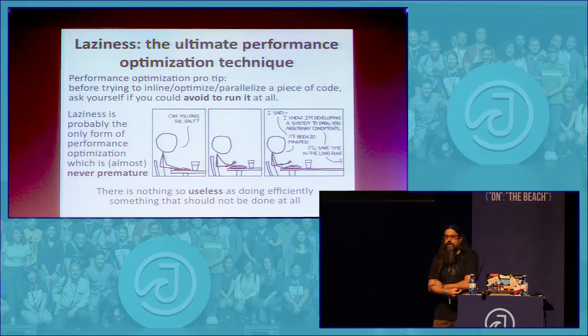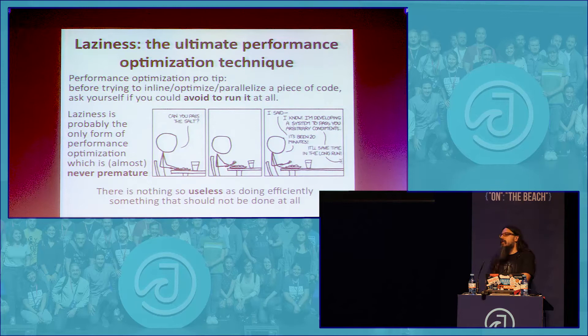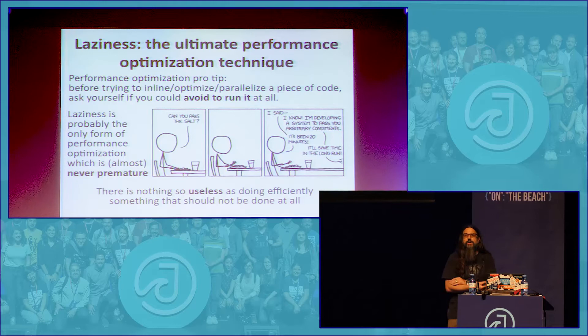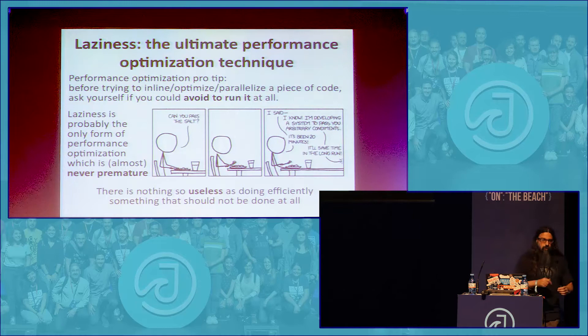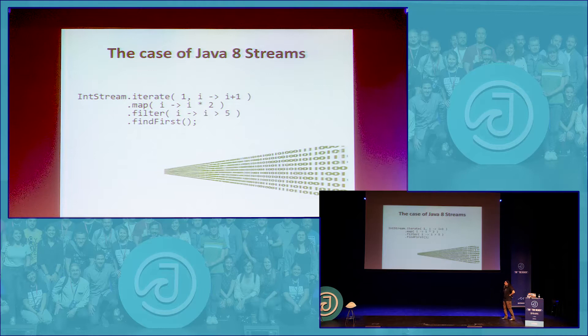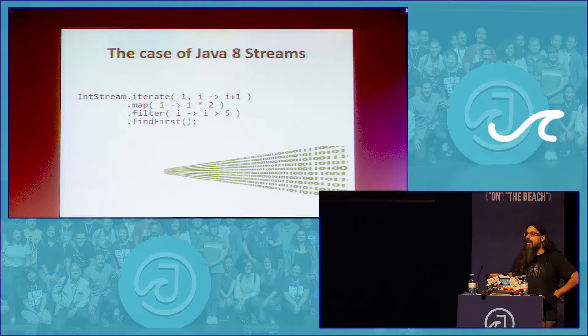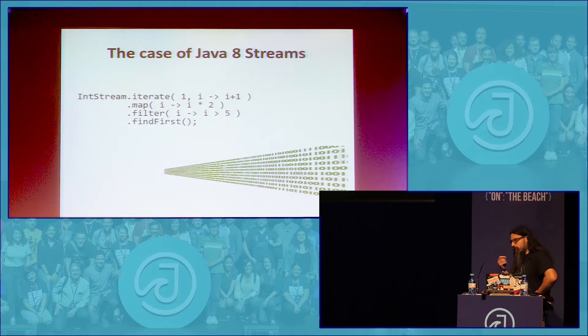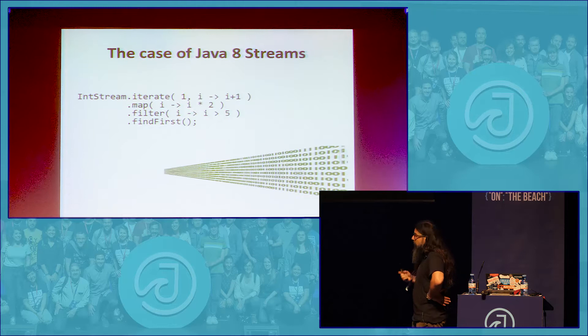There is a small price to pay because creating the lambda is not totally free, but the price is very reasonable compared to the work the JVM would have to do to compute that string every time, even when it's not necessary. Laziness is really the ultimate optimization technique — there is nothing faster than not doing something at all. It is the only form of performance optimization which is never premature.